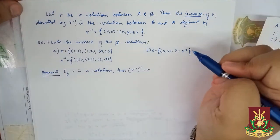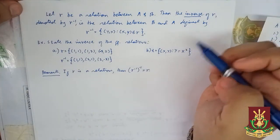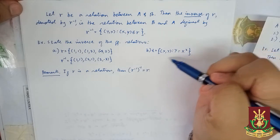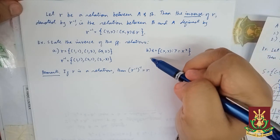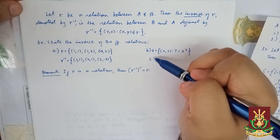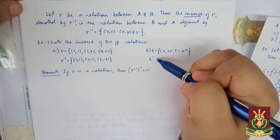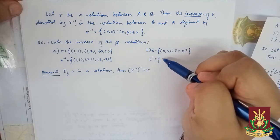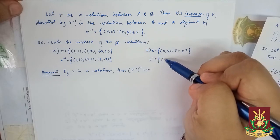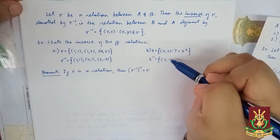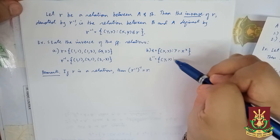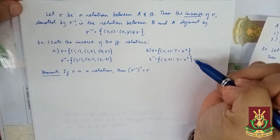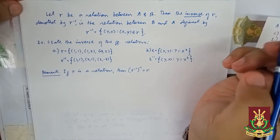If the given is T equals the set of ordered pairs (X, Y) such that Y equals X squared, then T inverse is equal to the set containing the ordered pairs (Y, X) such that Y equals X squared.